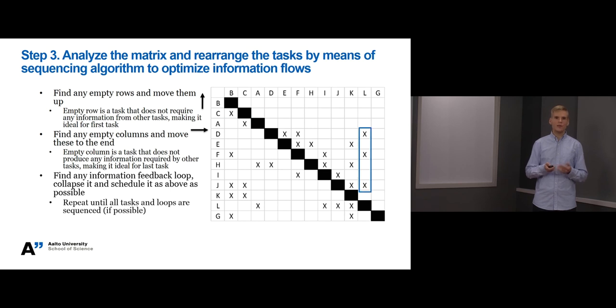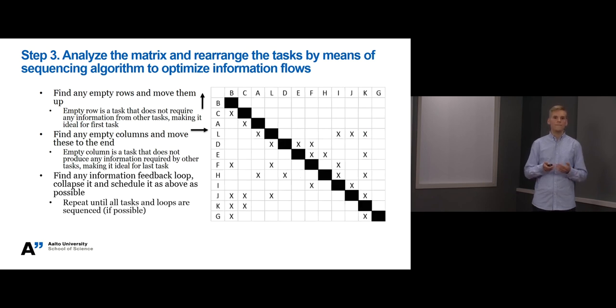Next we can see that task L produces information to tasks D, F and J. So we should move it before them to move the cross marks closer to diagonal and below it, and to minimize any information feedback loops. From now on you continue with the same logic. The key idea is to continue identifying these information feedback loops and eliminate or minimize them by moving tasks in the matrix.